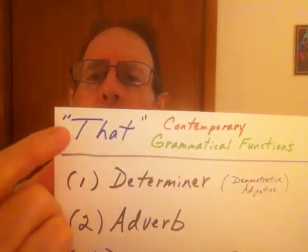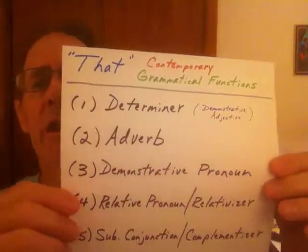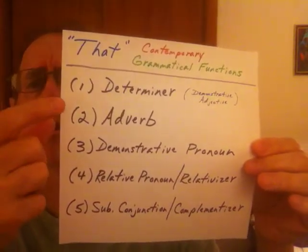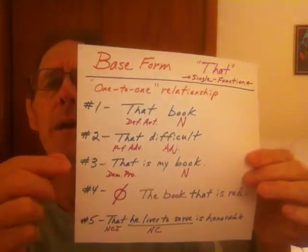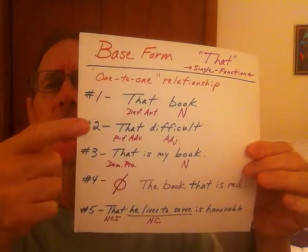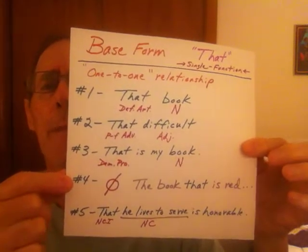Greetings, people who prefer grammar over rioting and pillaging. If you've watched the previous videos in this series, you'll know I've been talking about the word 'that' and I discussed its five contemporary or traditional grammatical functions. Then I talked about how I renamed some of those functions. Up to this point we've done the first three, and I'm up to number four. The whole point of the recent discussions has been this question: is 'that' really a relative pronoun, and is the so-called relative clause really a relative clause?